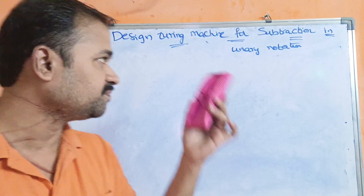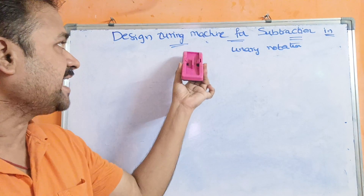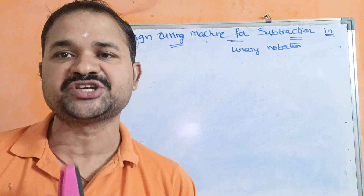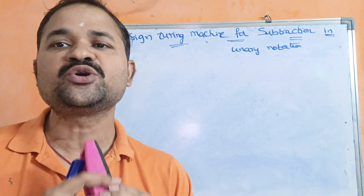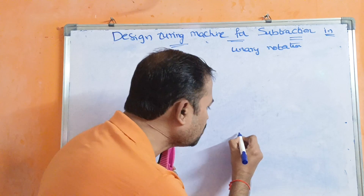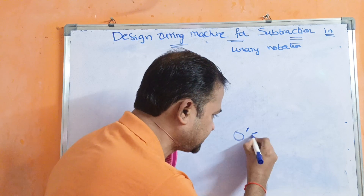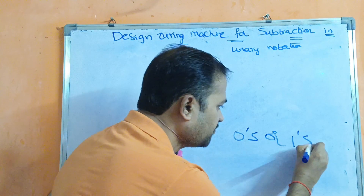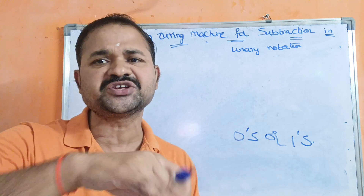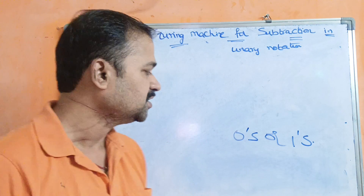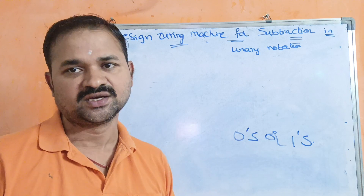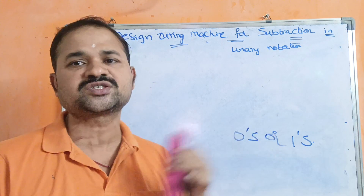Let's design a Turing machine for subtraction in unary notation. Unary notation means we use either zeros or ones, whereas binary notation means a combination of zeros and ones. In unary notation, it is our choice to use either zeros or ones.